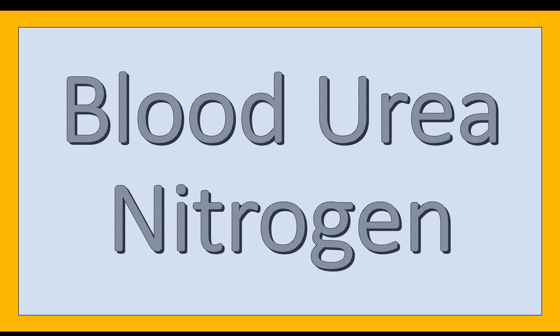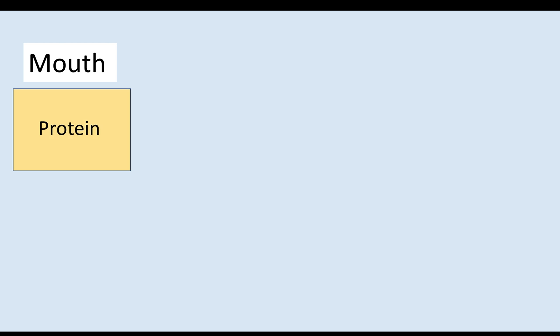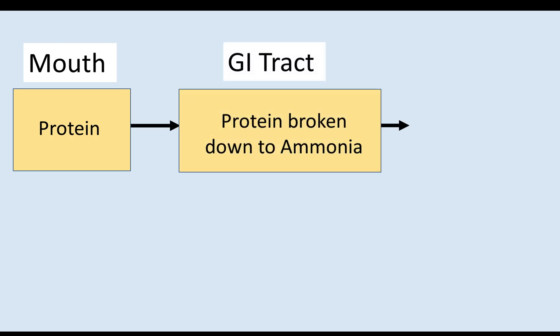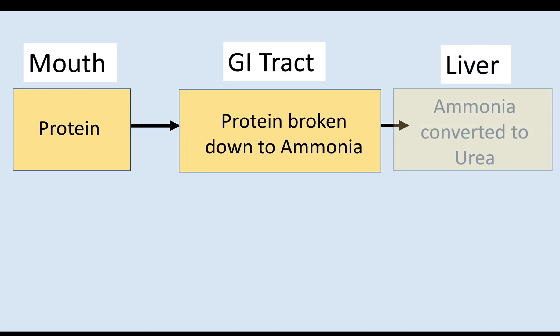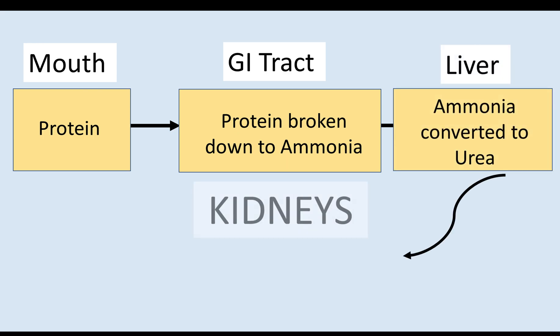BUN is nitrogen in the blood that comes from urea, which is a substance formed by the breakdown of protein in the liver. Protein ingested through the diet is broken down to amino acids and converted into ammonia in the GI tract. This ammonia is then converted to urea in the liver. Urea is transported in the blood to the kidneys to be filtered for excretion.